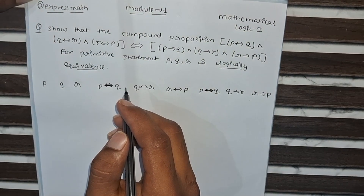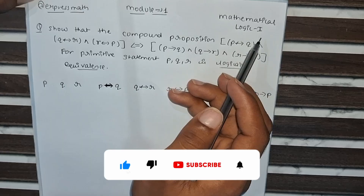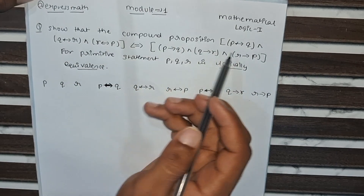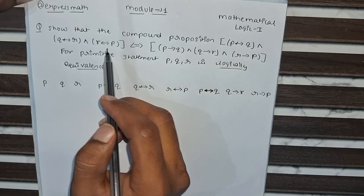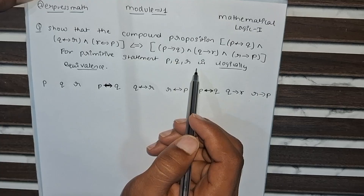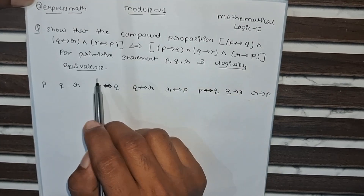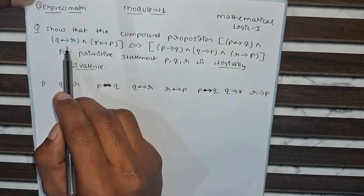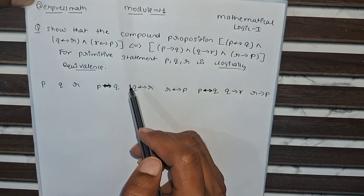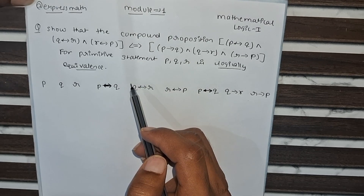Hello everyone, today we are going to solve another important problem from Module 1, Mathematical Logic 1. The question is to show that a compound proposition — this expression — is logically equivalent to this expression for primitive statements P, Q, R. The condition of logical equivalence is that the value of this expression equals the value of this expression. For solving this, we need to make a truth table.